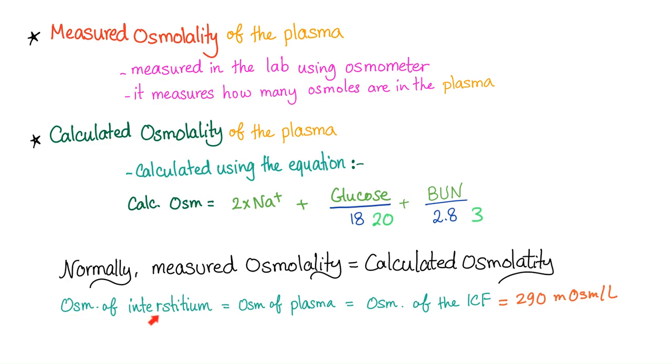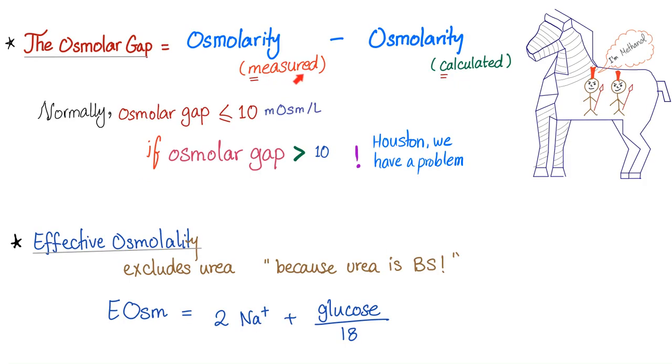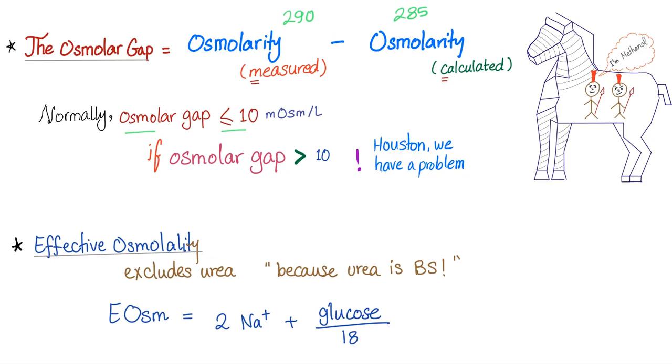And of course, normally, osmolality of the interstitium has to equal the osmolality of the plasma, has to equal the osmolality of the intracellular fluid. Otherwise, one of these compartments will swell and burst until you die. Normally, measured osmolality should equal calculated osmolality. What if they are not equal? This is called the osmolar gap. Normally, the gap should be less than 10. But if the difference is huge, Houston, we have a problem. We have been invaded by foreign invaders, foreign osmols, such as mannitol, ethanol, et cetera.